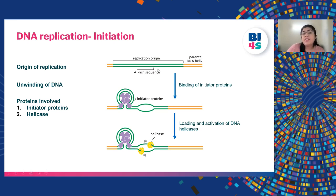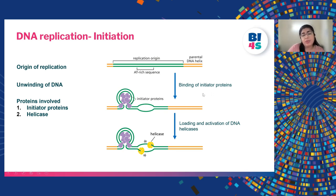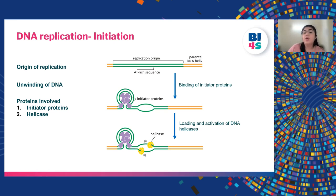Certain regions start unwinding first and these are generally AT-rich regions, because the bond between A and T is weaker, so these regions can open faster. Initially, a certain set of proteins known as initiator proteins come and bind to the DNA and help in the unwinding of the DNA. After that, a protein known as helicase comes and its major function is to sit on the DNA and keep it in the unwound state.